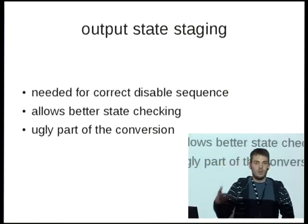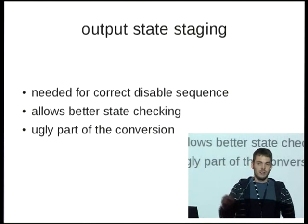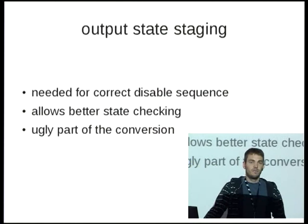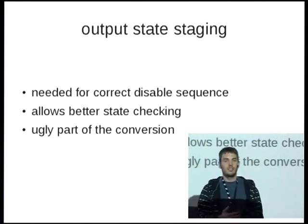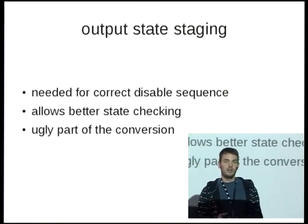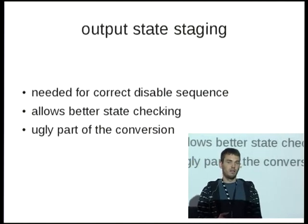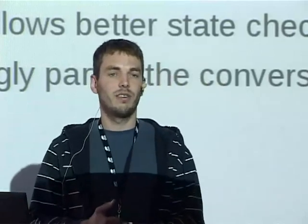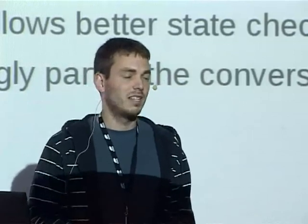We disable all the encoders because we still know what was actually enabled, then switch over to the new state and set up things fresh. A nice advantage is it allows simplifying state checking, because the disable sequence for a mode-set is exactly the same as DPMS-off, since we haven't changed any of the software state yet. We can simplify those checks and add a few more, because now it's guaranteed that the CRTC is actually still enabled while we're disabling it.